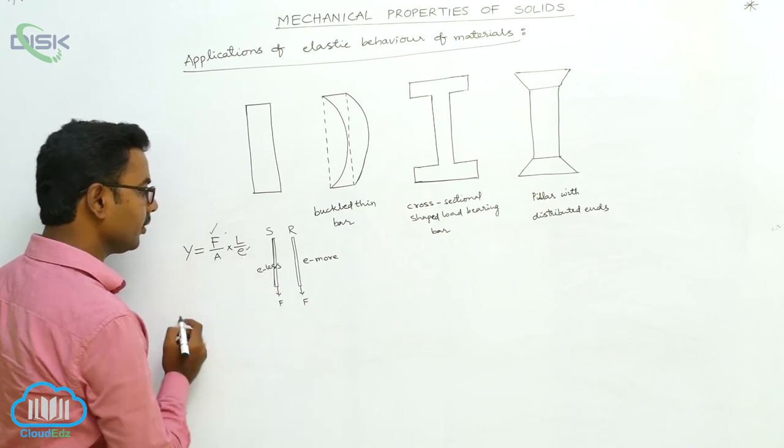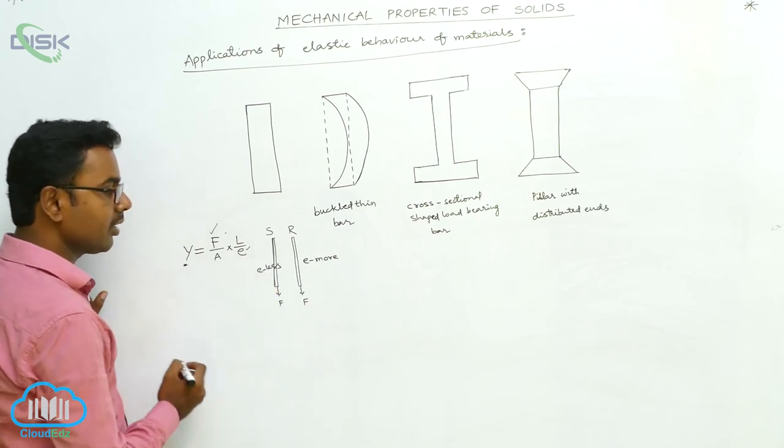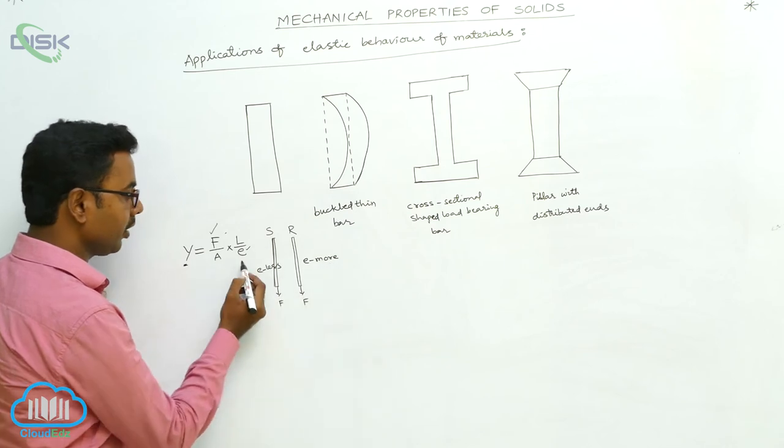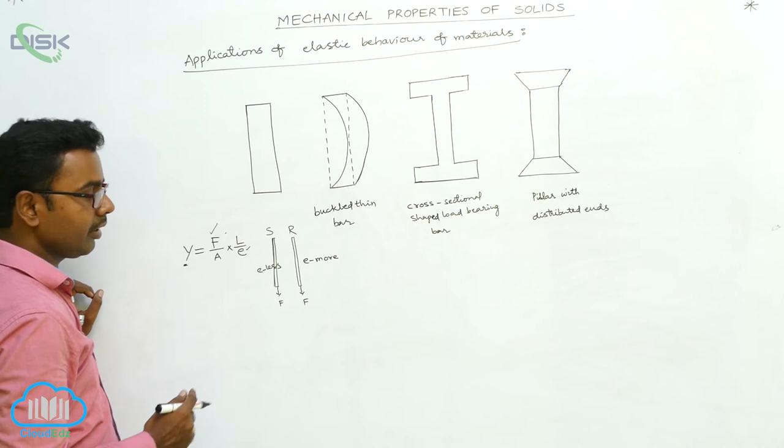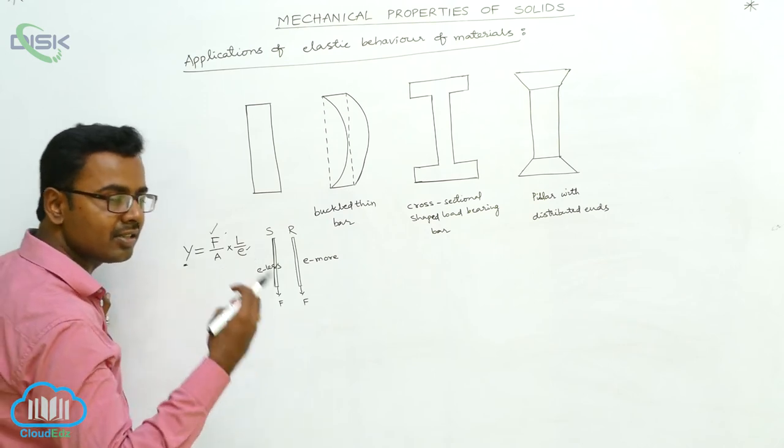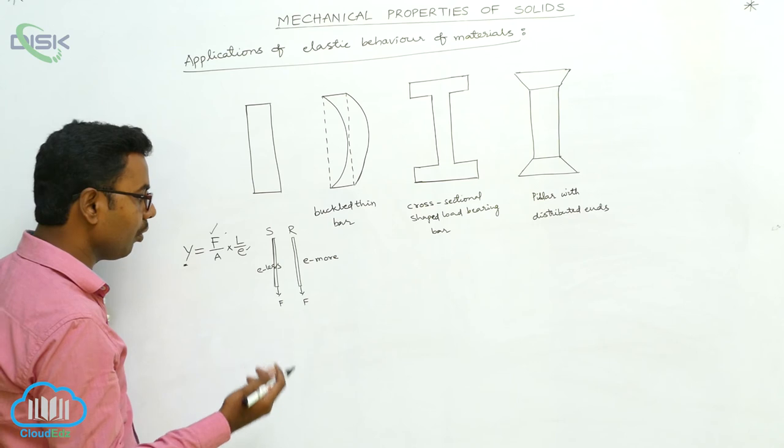If less is the elongation, Young's modulus is more. Here, more is the elongation for rubber. If more is the elongation, less is the Young's modulus. If less is the Young's modulus, elasticity is less. If more is the Young's modulus, elasticity is more.